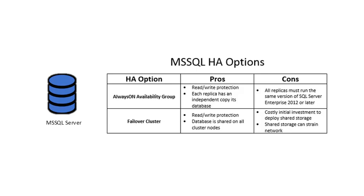An alternative is a failover cluster, where the database will be shared between all of your cluster nodes. However, deploying that shared storage can be costly, and if your SQL servers are far apart from one another, it can also strain the network. For these reasons, an availability group is our most commonly recommended Microsoft SQL HA option.